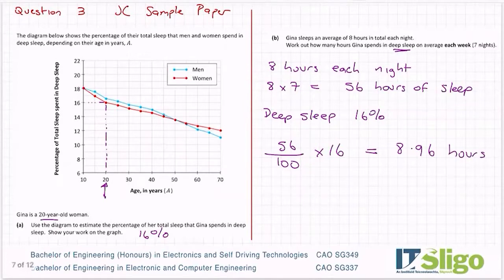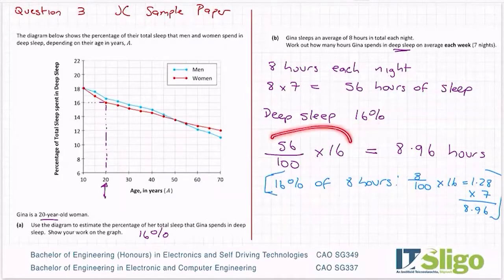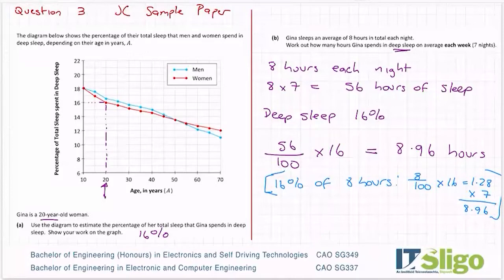You could also do it by finding 16% of 8 hours first: 8 ÷ 100 × 16 = 1.28 hours of deep sleep per night, then multiply by 7 days to get 8.96 hours as well. It doesn't matter which way you do it — that's why percentages are useful, you can work per week or per day and multiply by 7.